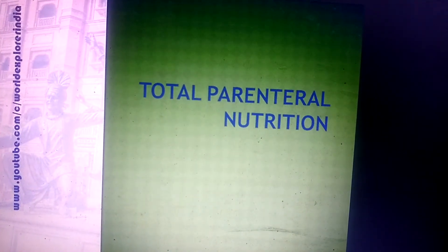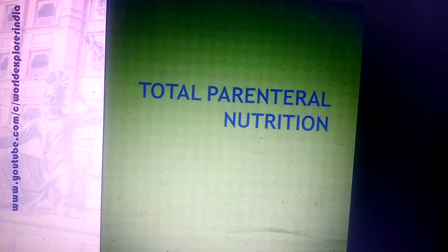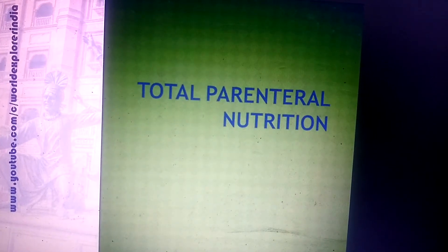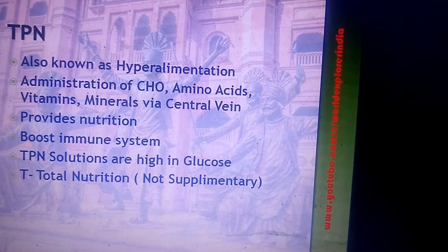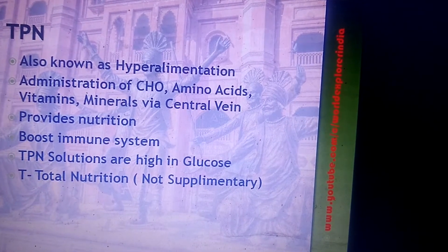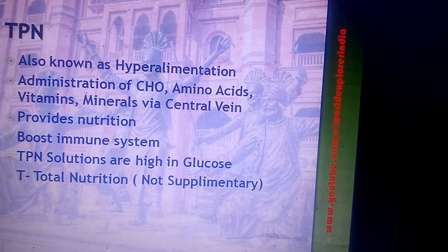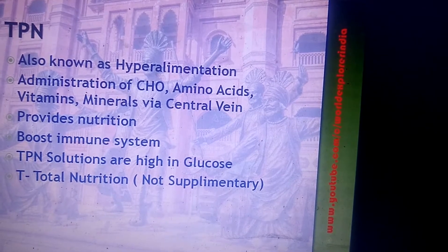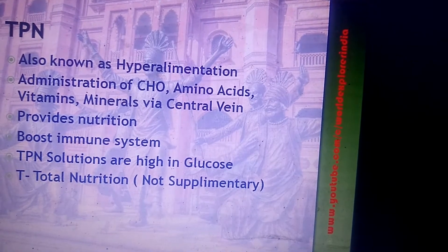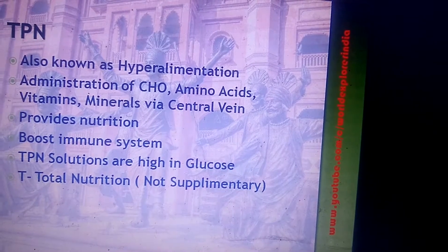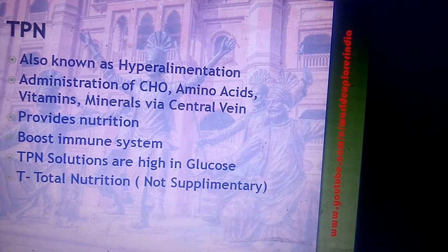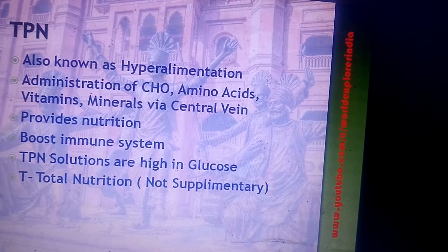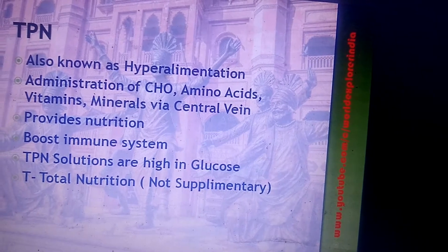Welcome to World Explorer India. Today's topic of discussion is Total Parenteral Nutrition (TPN), also known as hyperalimentation. It is the administration of carbohydrates, amino acids, vitamins, and minerals via a central vein, to provide nutrition to the patient. TPN solutions are high in glucose and also help boost the immune system.